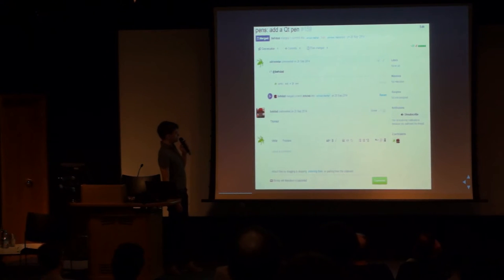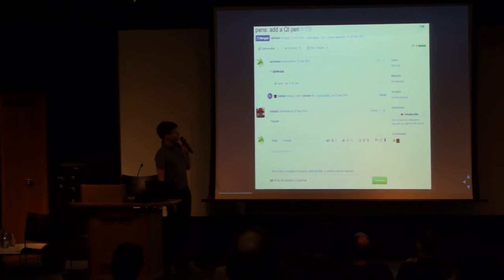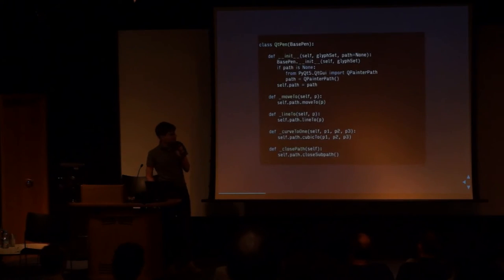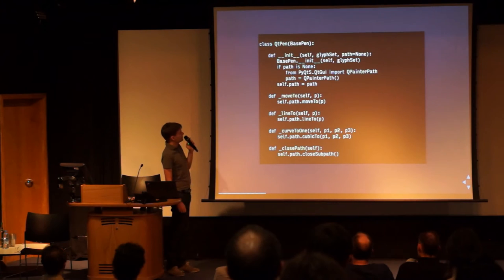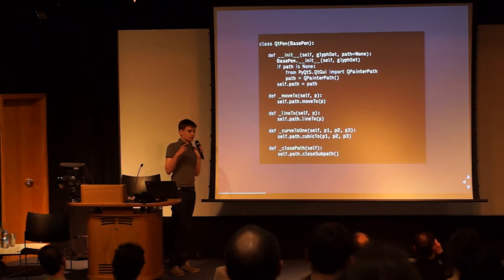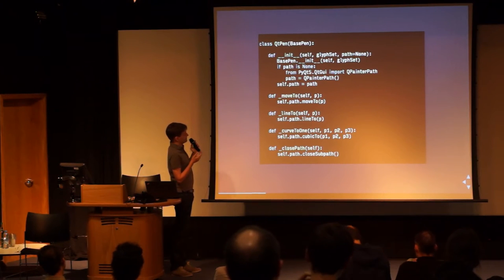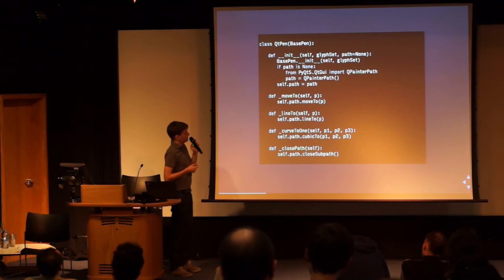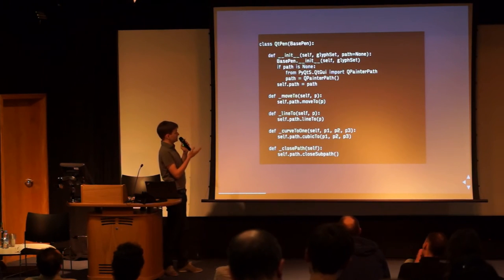As soon as September 2014, I started working on a replacement. This pull request was the first step in my journey, working with Qt and PyQt to be accurate. Here's the actual content of that PR — it's basically adding what's called a pen. A pen is a way to transfer control data between different representations. What it's doing here is taking the data from the back-end and drawing it into the QPainterPath object, which is the Qt object for Bezier paths. Once you've got that, you can draw it on screen.